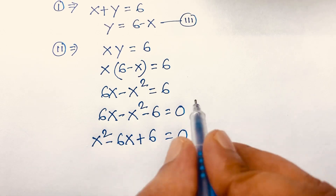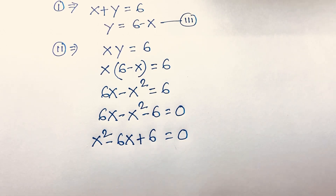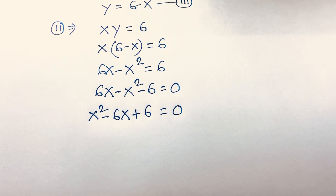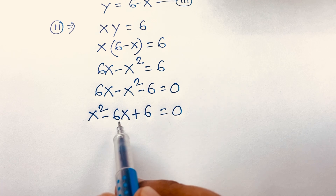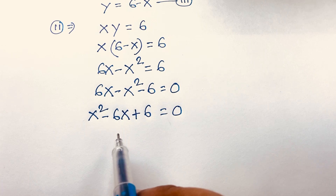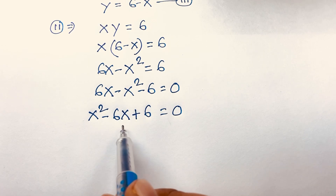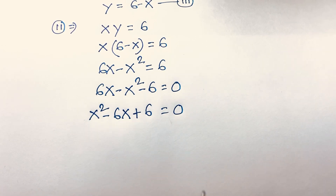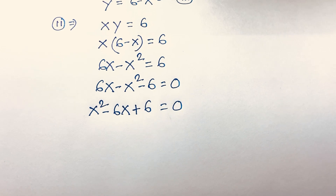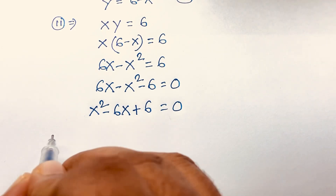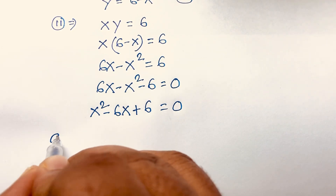Multiplying both sides by negative 1, we get x squared minus 6x plus 6 equals 0. This is a quadratic equation.